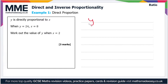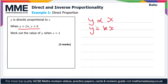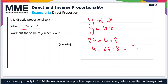If y is directly proportional to x, we can write this as y α x, or we can set up an equation where y equals kx. We've been given a pair of values for y and x, so we can substitute those values in, and that'll give us the value of k. So 24 equals k times 8; dividing both sides by 8 gives k equals 24 divided by 8, which is 3.